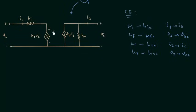I hope you now understand how to obtain the equivalent circuit using the hybrid parameters. If you have any doubts, you may ask in the comment section. I will end this lecture here; see you in the next one.